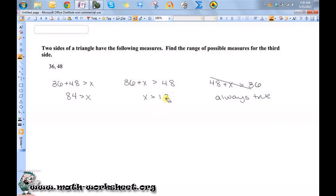Okay, so 84 is greater than x, and x is greater than 12. So if I were to write this in a compound inequality, I'd have 12 is less than x, which is less than 84.